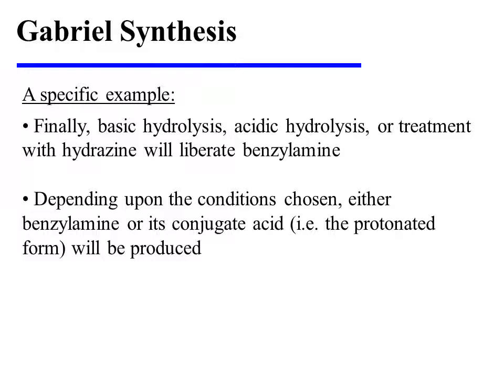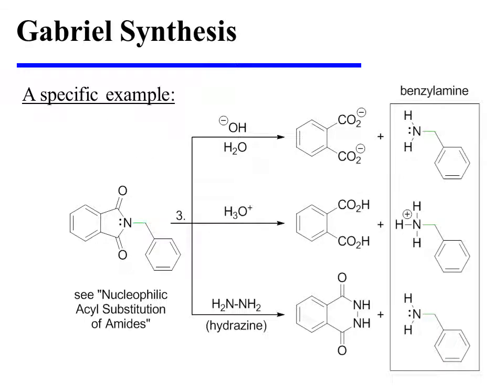Depending upon the conditions chosen, either benzyl amine or its conjugate acid will be produced. All three options are diagrammed on this slide. Notice that basic hydrolysis or treatment with hydrazine will release benzyl amine, while acidic hydrolysis will release the conjugate acid of benzyl amine.